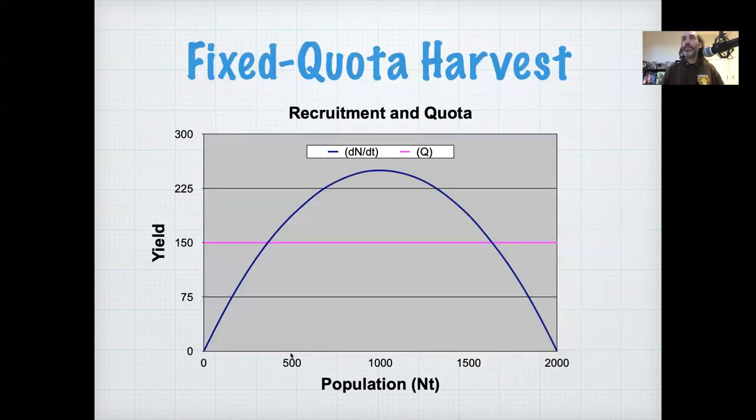First, let's note where the two equilibria are. When we just were looking at the growth curve by itself, the equilibrium was when the growth rate equals zero, the dn/dt equals zero. Now, when we're looking at harvest systems, the equilibrium is when the growth rate equals the harvest rate. And so we have two equilibria marked by these two dashed lines.